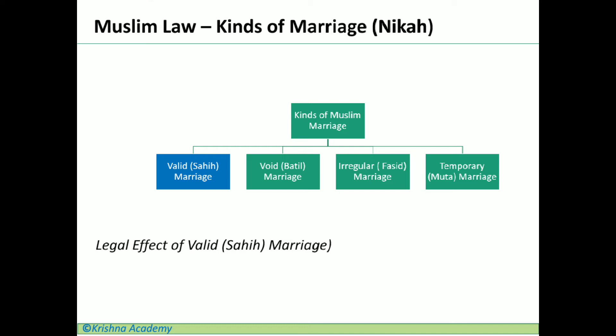The legal effects of valid marriage are: first, cohabitation of husband and wife is lawful and not immoral. Second, children from such marriages are lawful and can inherit the property of the parents. Third, the couple gets mutual rights of inheritance — in case of a valid marriage, the husband can inherit from the wife's property and the wife from the husband's property. Additionally, in such a marriage the wife can claim meher, which is mandatory and is her right.